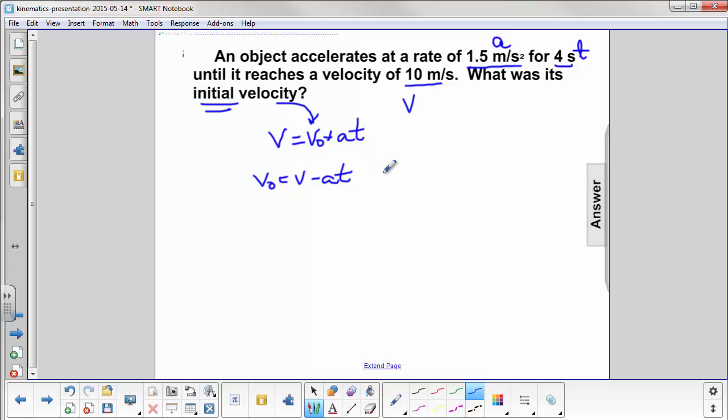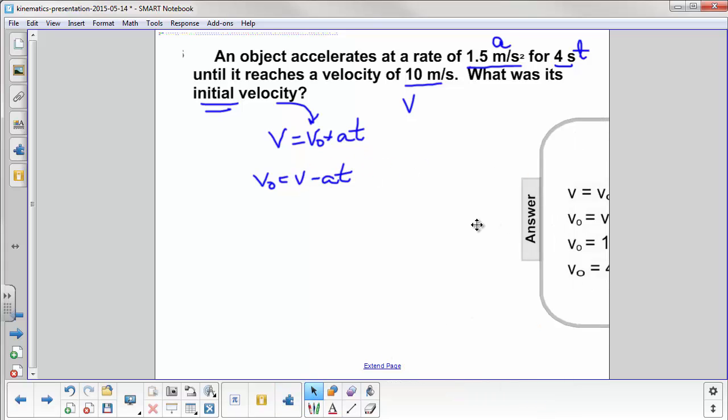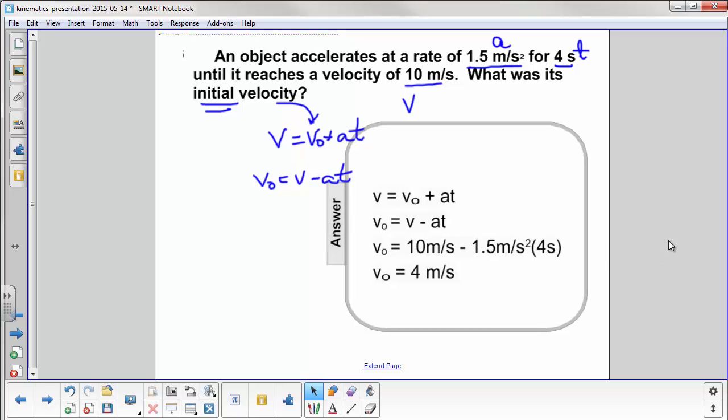We subtract at from both sides, put v₀ on the left, and now we can put in our numbers. We have 10 meters per second minus the acceleration times time, 1.5 meters per second squared times 4 seconds, which gives us meters per second, and we wind up with an initial velocity of 4 meters per second.